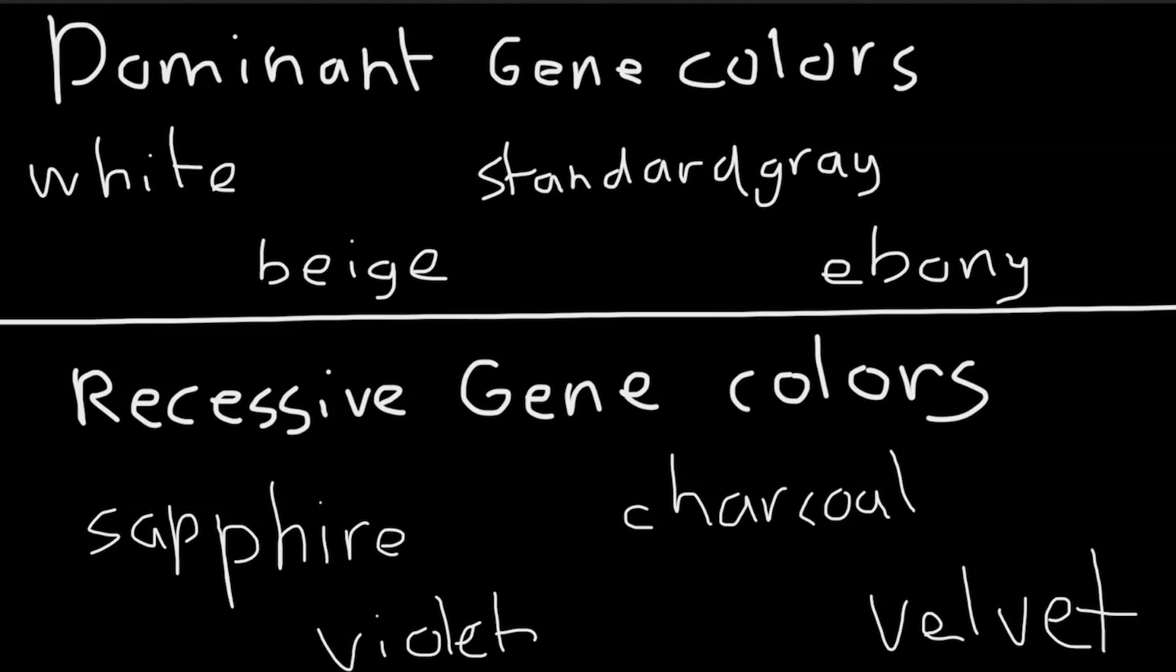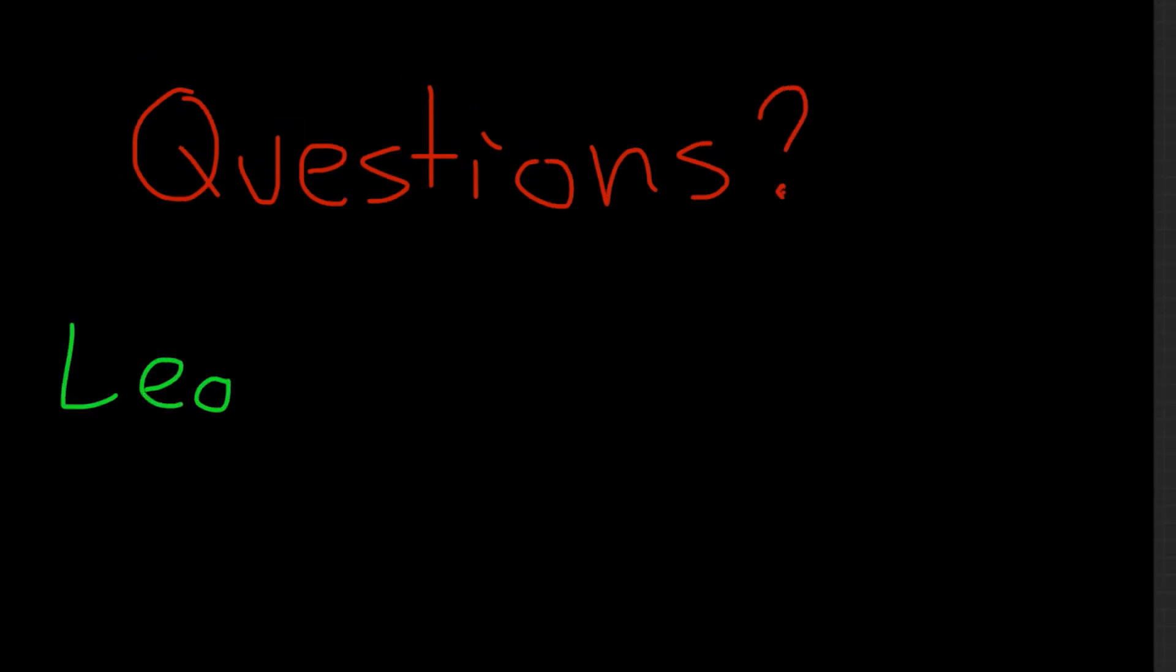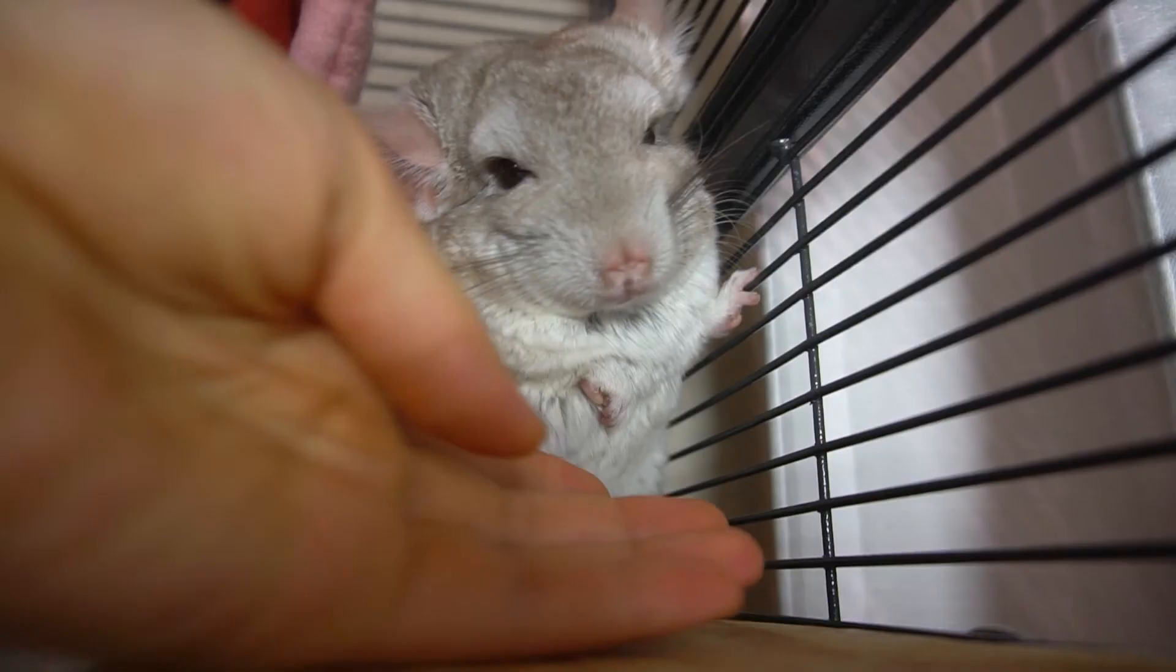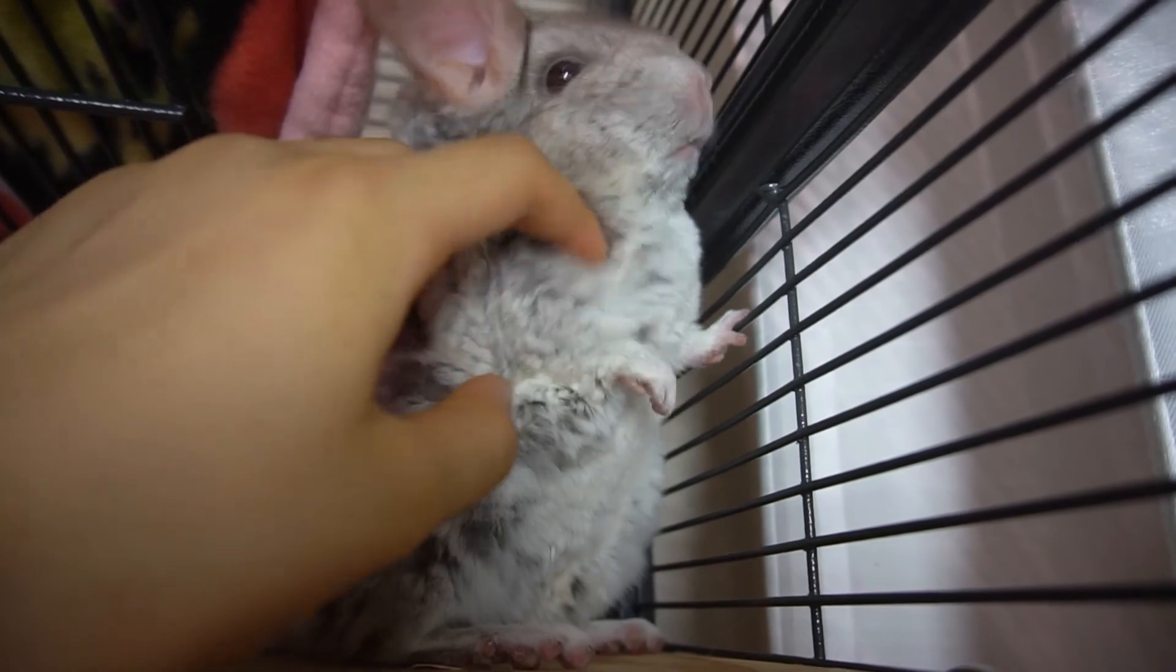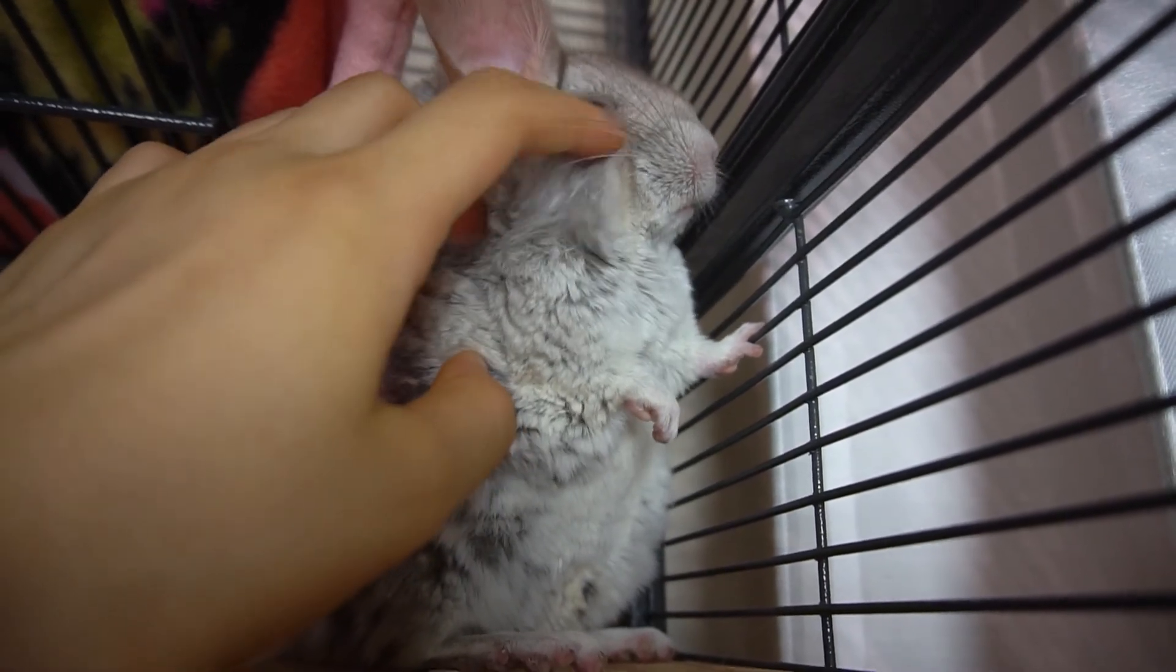So yeah, now you know why chinchillas appear the way they are. And you also know how to predict what the color the baby will be based on the parent colors. If you have any questions about any concepts, let me know in the comments. I will respond to them. And I guess that will be all for this week's video. Let me know in the comments if this was interesting for you. Thank you so much for watching and I will see you next week. Bye!